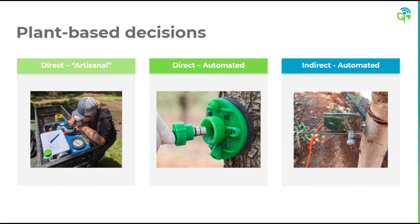Moving on to a discussion of the plant-based approach to irrigation scheduling — with the plant-based approach we're trying to measure crop water status in some way, using these measures as a signal for when we should next irrigate. This approach is best used in conjunction with soil-based and weather-based approaches, because while it can tell you when to irrigate it doesn't necessarily tell you how much to irrigate. Using a pressure chamber or pressure bomb to measure stem water potential would be an example of a direct approach to measuring crop water status. While the pressure chamber is a proven and well-documented technique, it's a very labor-intensive process that requires a developed skill set. But now we're seeing new automated sensors emerge onto the market that still provide direct stem water potential readings.